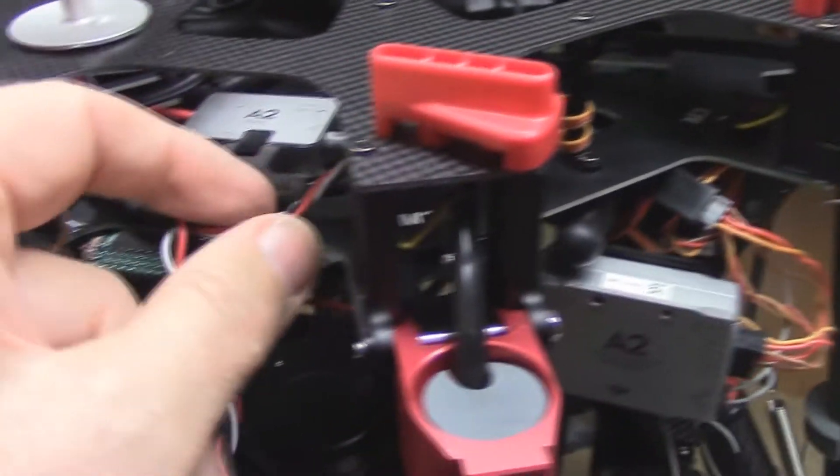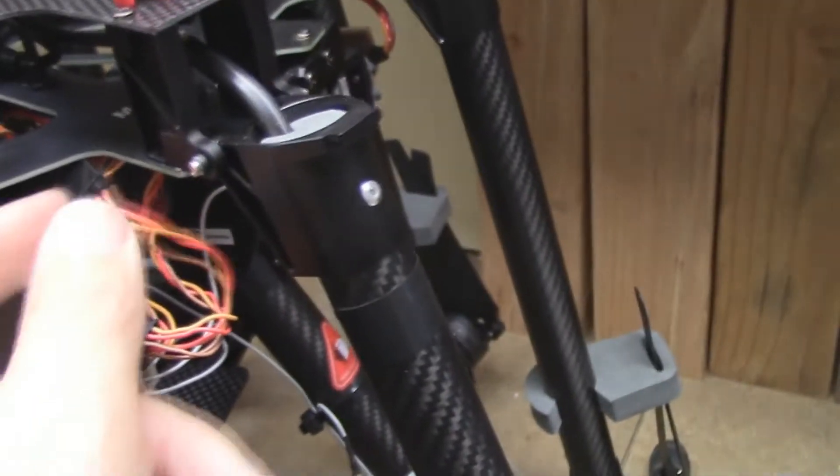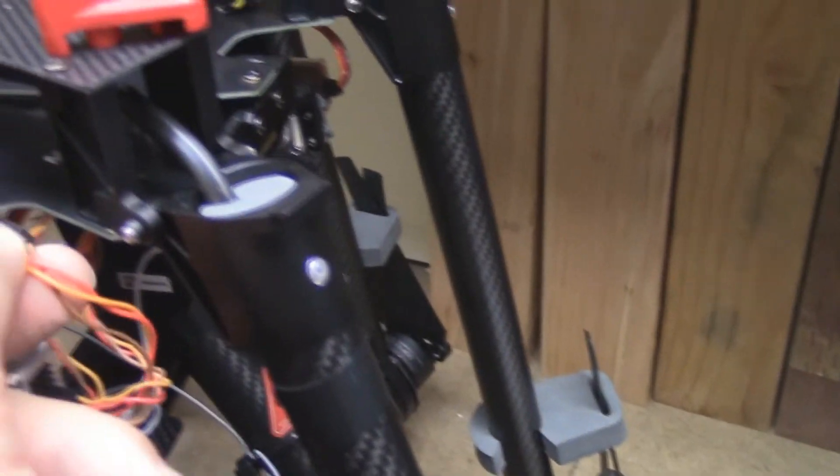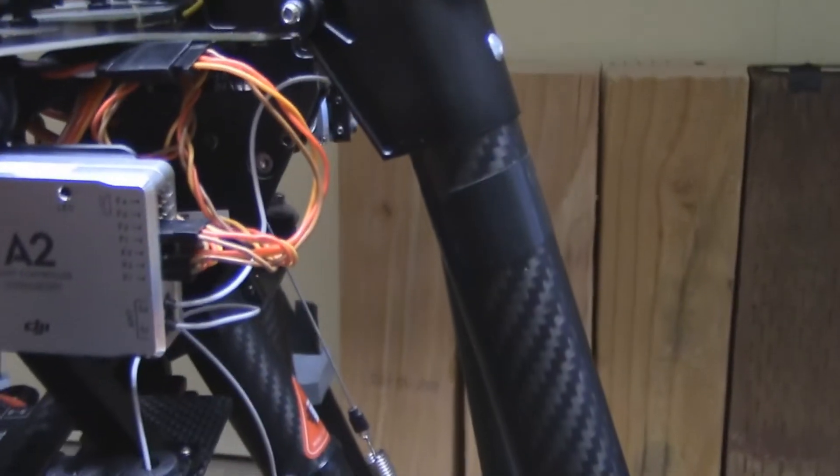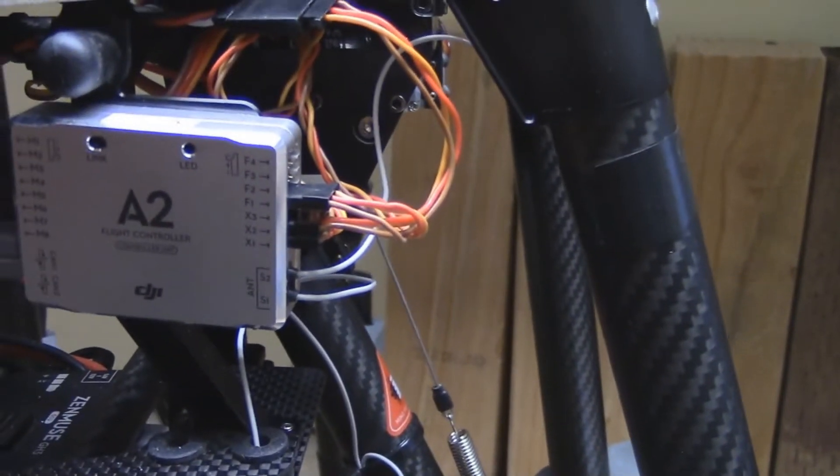The other end of the Y harness I'm running over to an extension from the red white black cable into my A2, and that will go into the X2 on the A2.